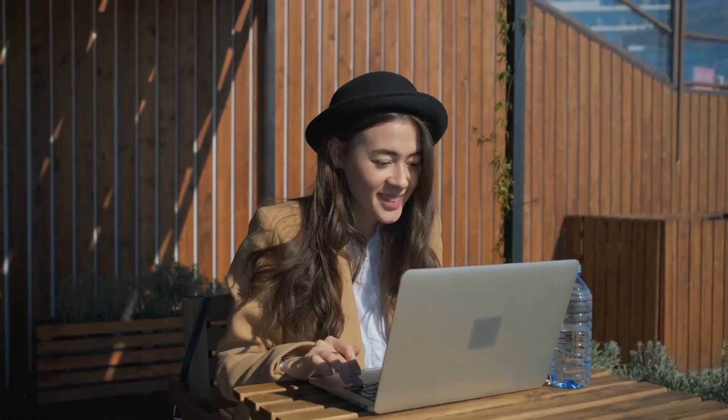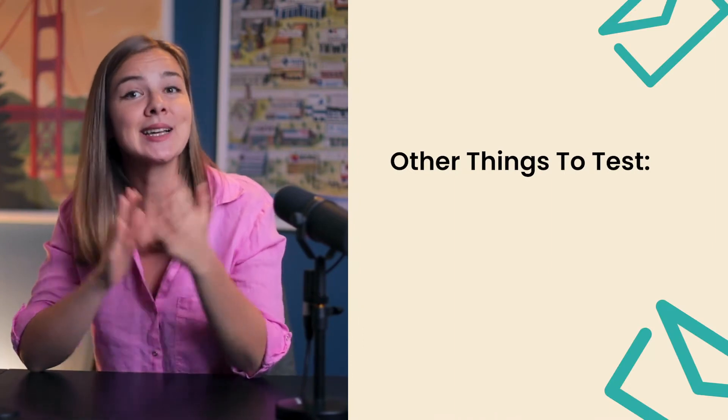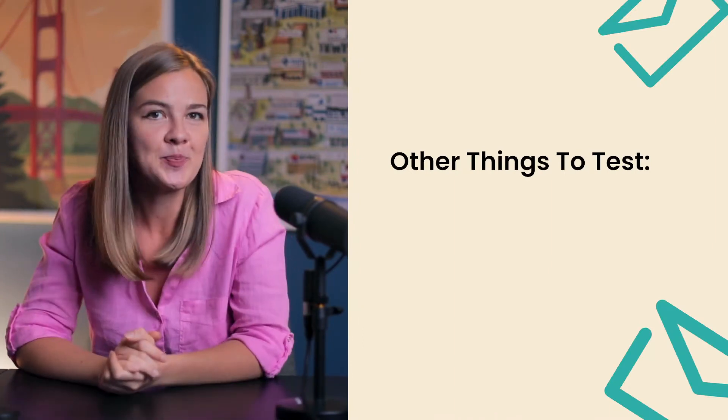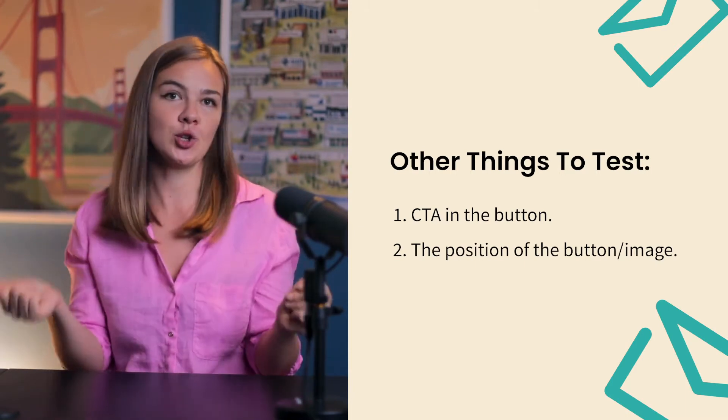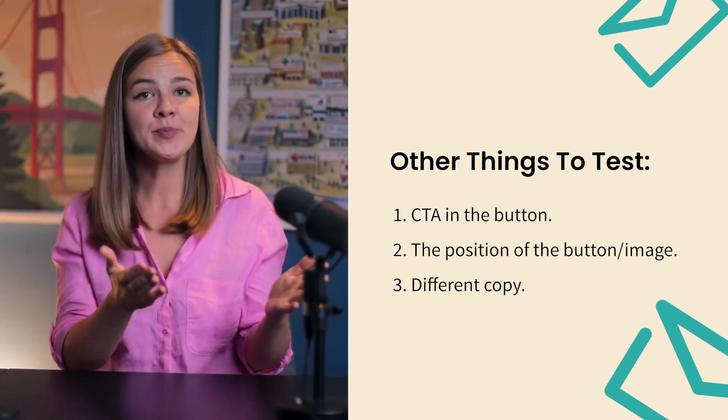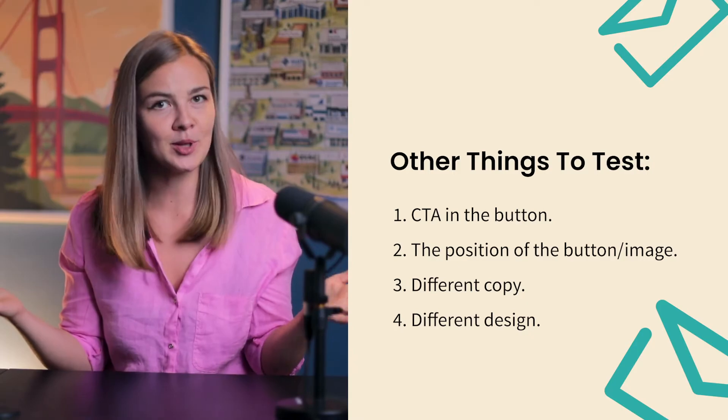Which takes us to the second metric: click rate. What do you think would do better — an image of your product or user generated content? The best way to know is to run an A/B test and let your readers show you, with their clicks, what content moves them better. Here are a few other things you could test and set click rate as your winning criteria: CTA in the button, the position of the button or the image in your email, different copy, and a completely different design template altogether.